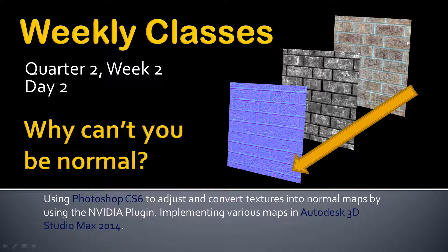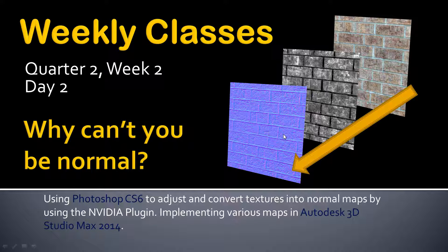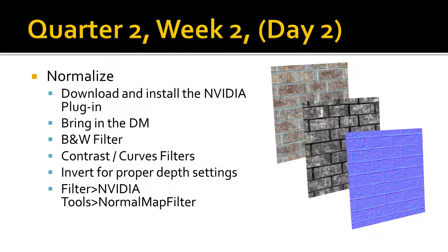Today is day two — 'Why Can't You Be Normal' — so we're going to start with the image we ended with yesterday. We're going to convert it to black and white and then do a little more work to make sure the normal map comes out looking just right. We'll also talk about settings you'll need to use your normal map in 3D Studio and ultimately in Unreal Engine.